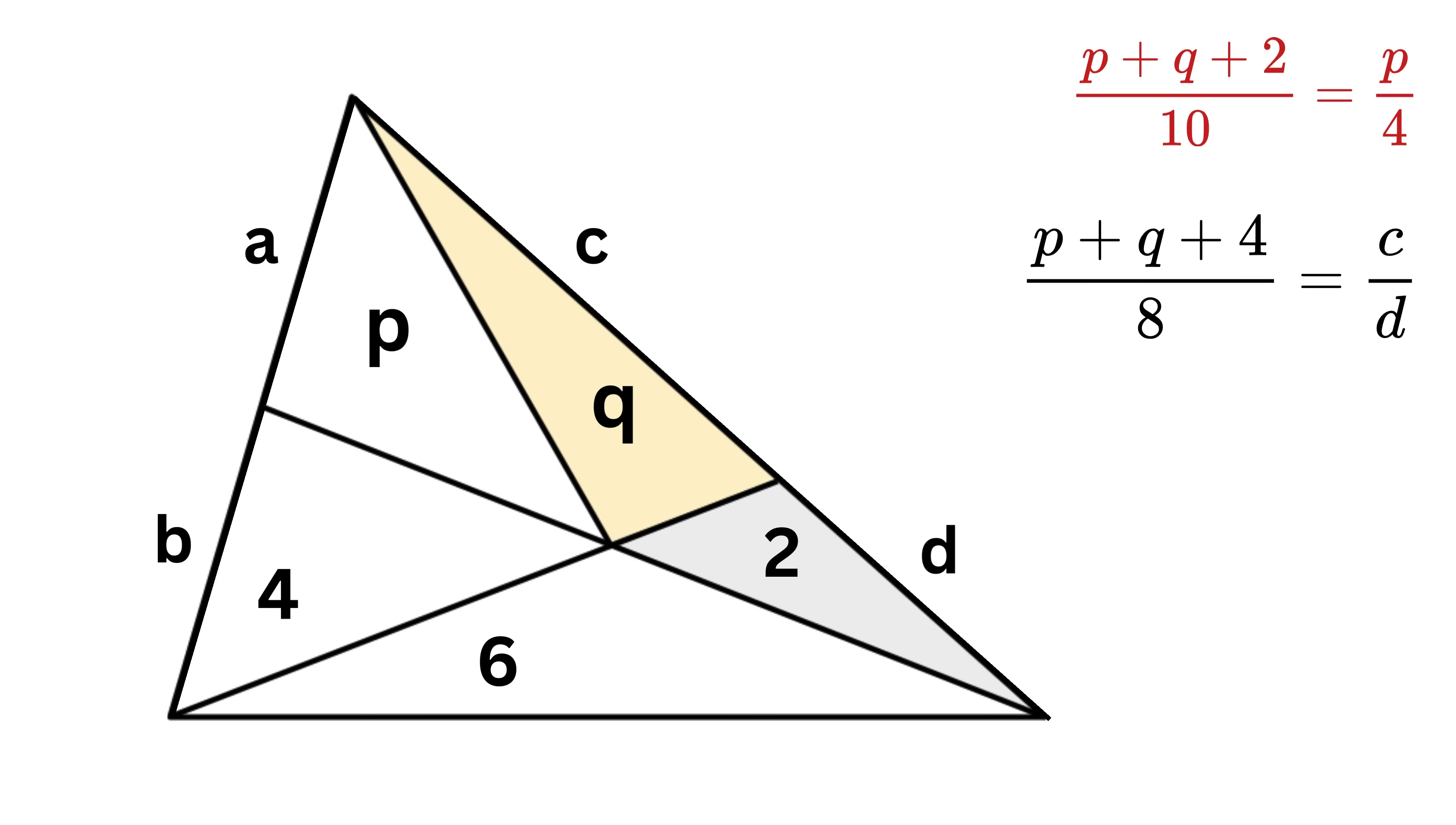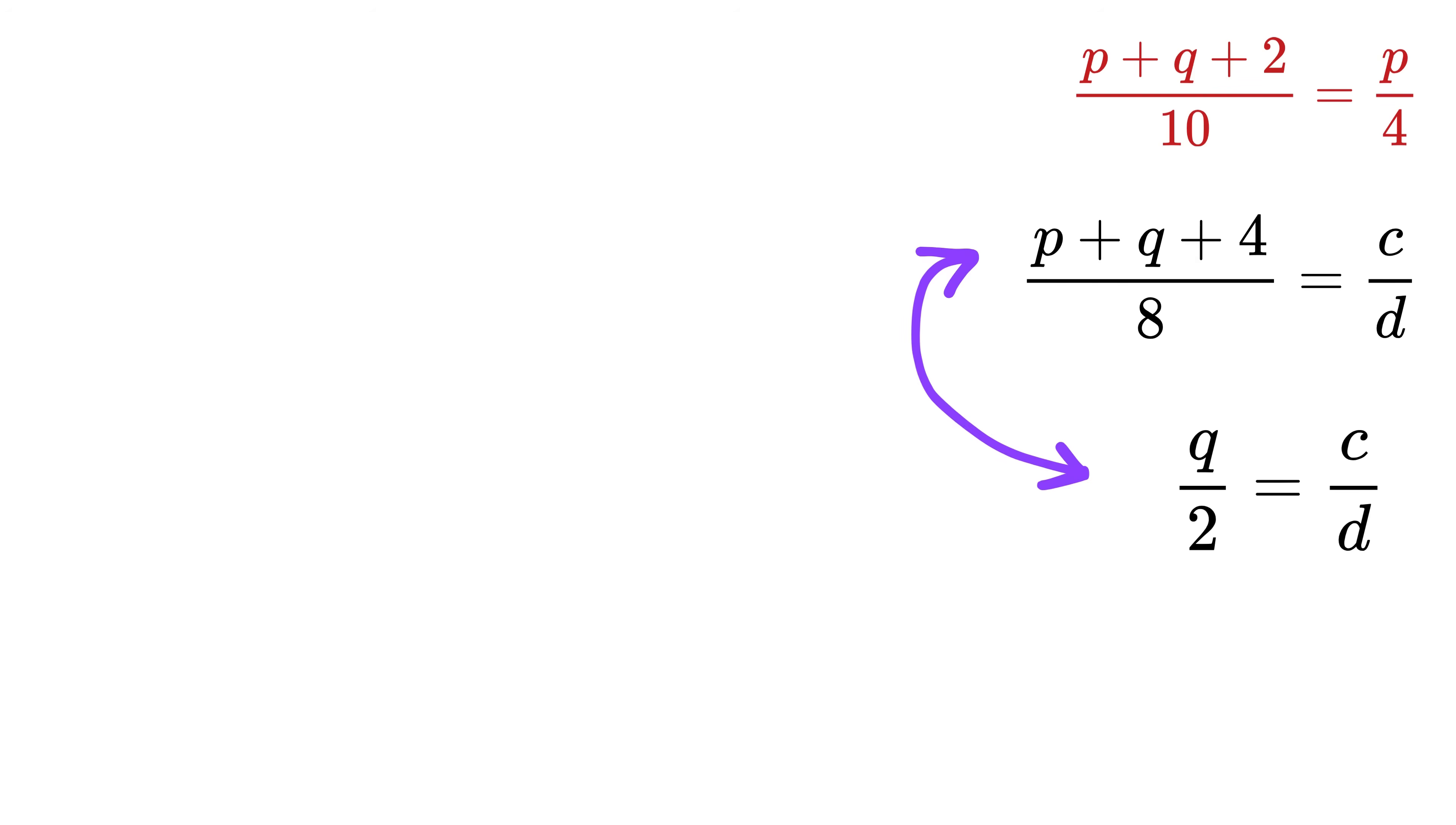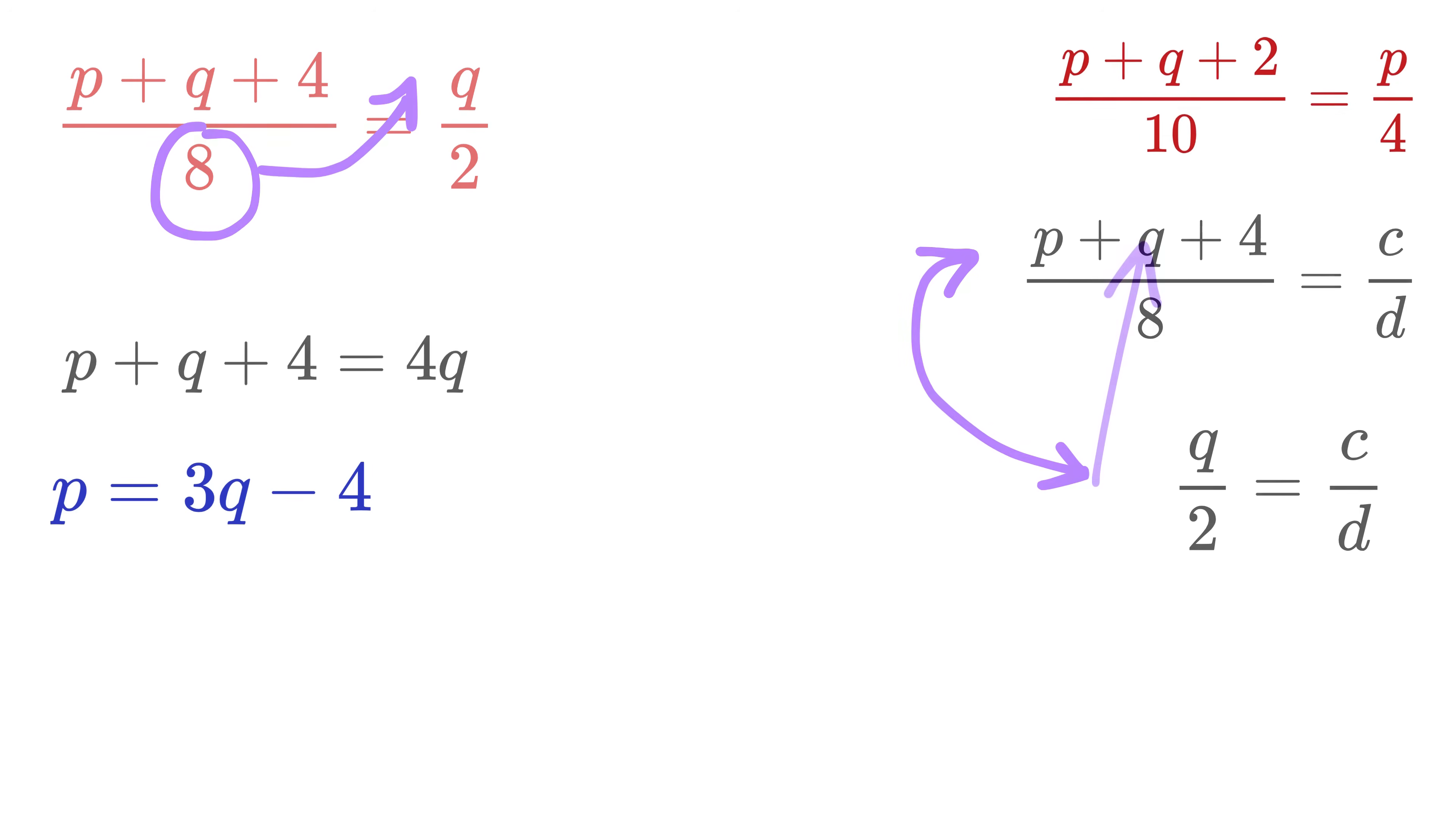Then, if we consider these two smaller triangles, we get area of both these triangles will be the same as the ratio of their bases, or Q over 2 equals C over D. So, from both of them we get P plus Q plus 4 over 8 equals Q over 2. Aha! Bring this 8 here to get P plus Q plus 4 equals 8 over 2 times Q or 4Q. This gives P equals 3Q minus 4.